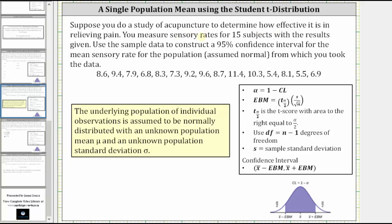Suppose you do a study of acupuncture to determine how effective it is in relieving pain. You measure sensory rates for 15 subjects with the results given below. Use the sample data to construct a 95% confidence interval for the mean sensory rate for the population assumed normal from which you took the data.